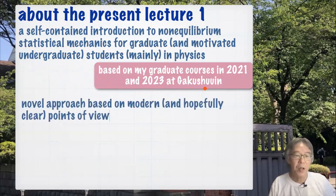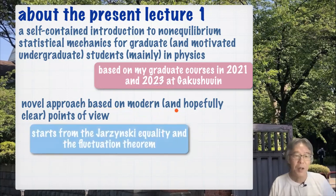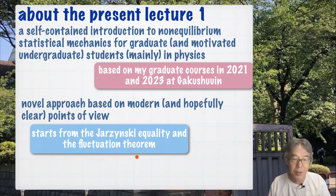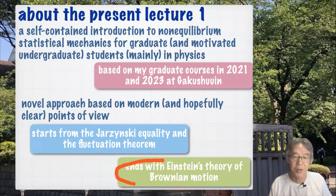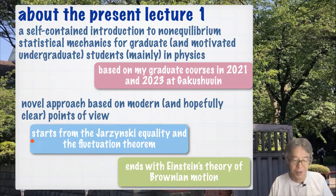Here I want to develop a new approach based on modern points of view. For example, this course actually almost starts from something called the Jarzynski Equality and the Fluctuation Theorem. Probably you have heard of them. And actually it ends with Einstein's theory of Brownian Motion. Many books and lectures on non-equilibrium statistical mechanics start from Einstein's theory of Brownian Motion and end by discussing modern things like this, but I'm doing things in the opposite order.